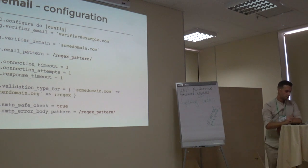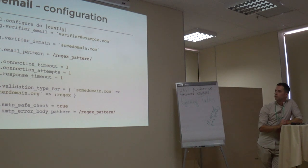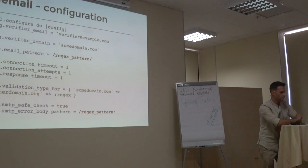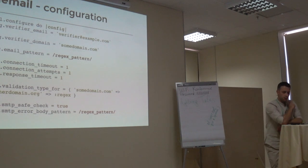Also you can configure some network connection settings: connection timeout, connection attempts and response timeout. By default all of them are equal to two. The next fancy option is validation type for. You can pre-define which type of validation will be used for domains. The configuration will be used over current or default validation type parameter. And the last two options I will describe later in the next slides.